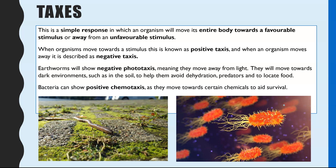Bacteria are another example and they can show positive chemotaxis, which means they move their entire body — normally just a single cell — towards particular chemicals. This helps with their survival, especially inside a host organism, where they'll move towards chemicals to try and avoid the immune response. So taxis is the entire organism moving from one position to another.